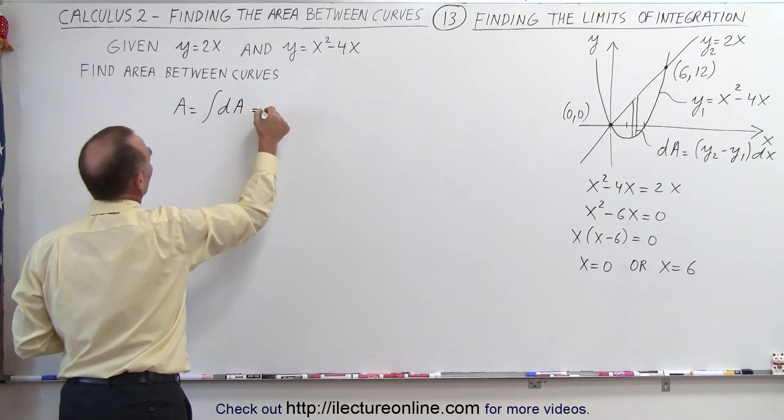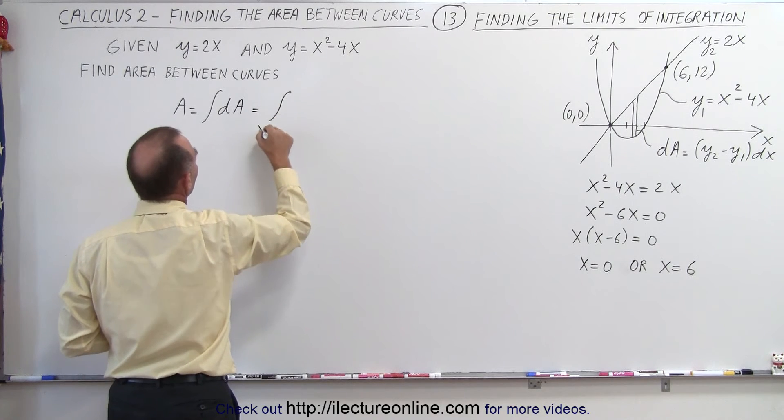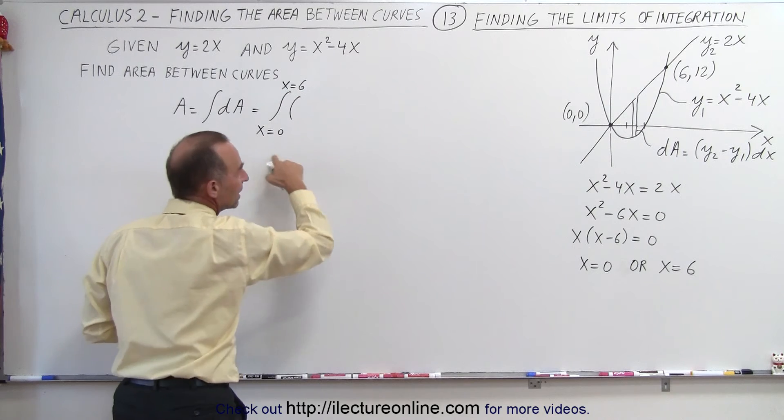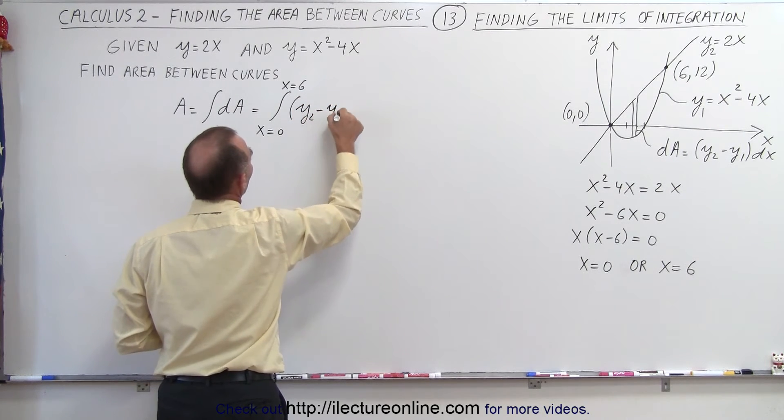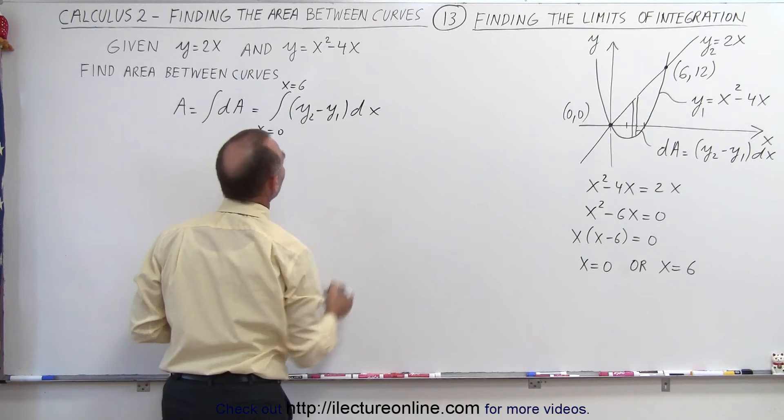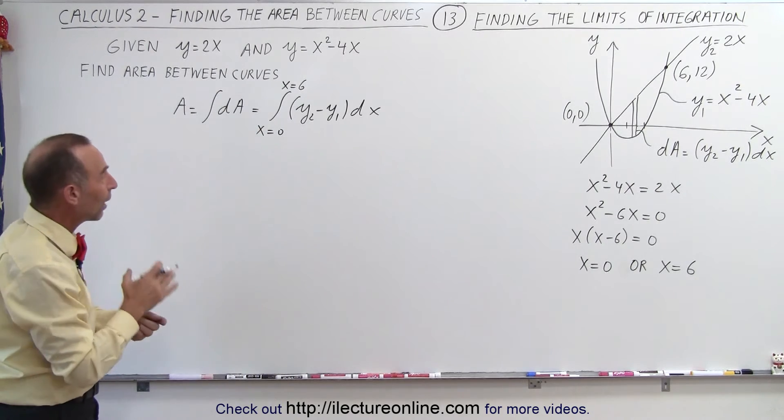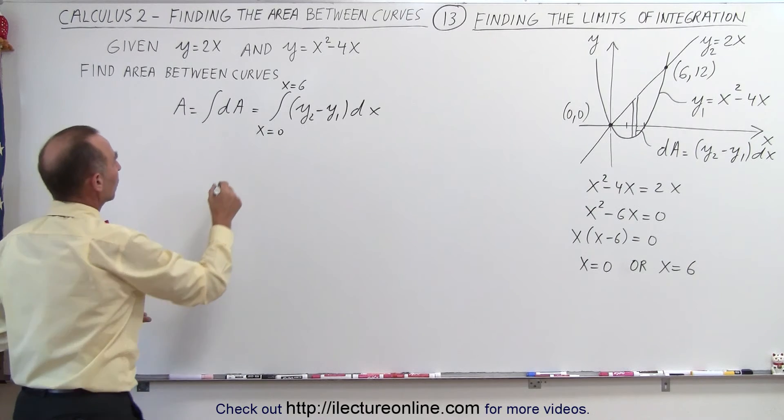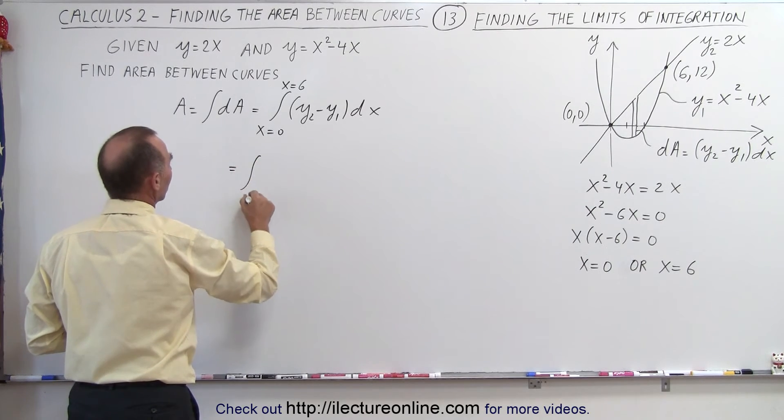Now dA will be y2 minus y1 times dx, and all we'll have to do now is plug in what our y2 and y1 are equal to in order to start the integral. So this will be equal to from 0 to 6...